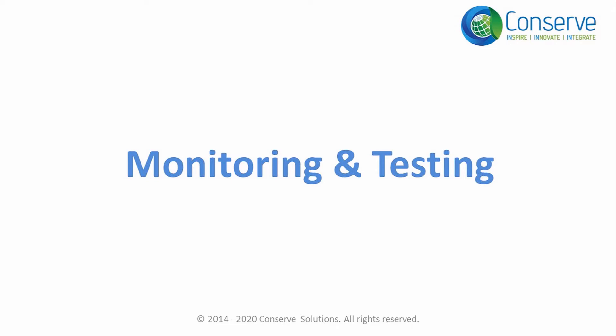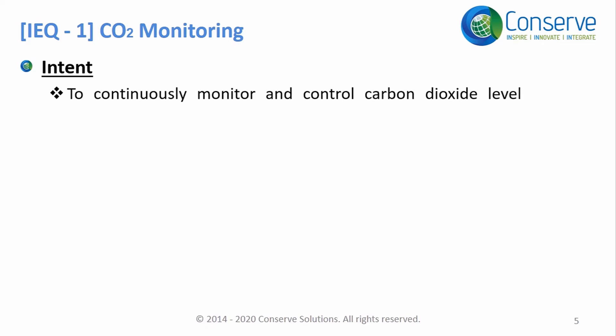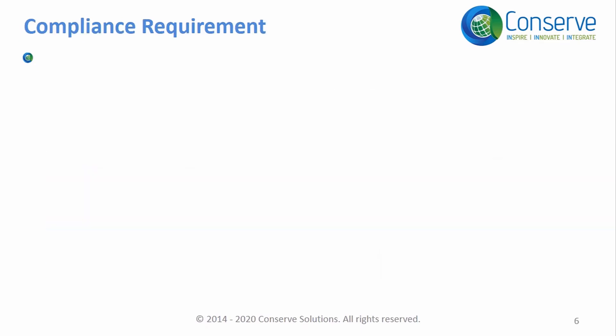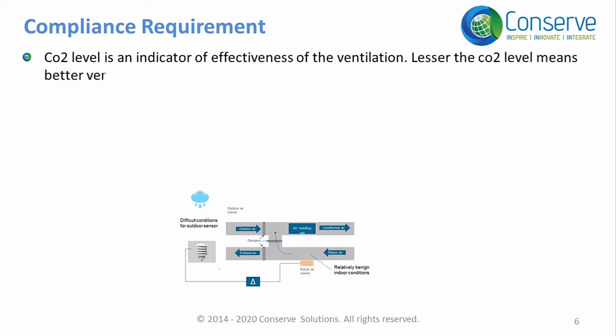There are two credits associated with monitoring and testing of indoor air quality levels: Credit 2, CO2 monitoring, and Credit 7, Indoor Air Quality Testing after construction and before occupancy. The intent of the CO2 monitoring credit is to continuously monitor and control carbon dioxide levels in the building to ensure occupant comfort and well-being. CO2 level is an indicator of the effectiveness of ventilation — lower CO2 means better ventilation, and higher CO2 means ventilation is poor.